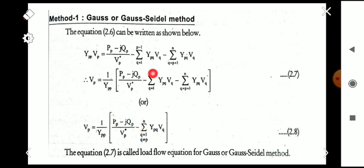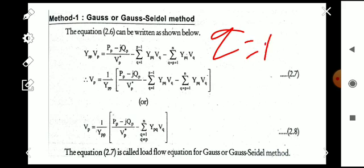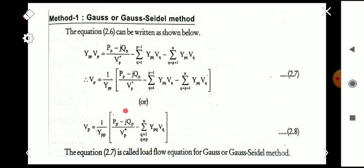Moving Ypp to the right-hand side, we get: Vp = (1/Ypp) · [ (Pp − jQp)/Vp* − sigma (q=1 to n, q≠p) Ypq·Vq ]. Here q=p is excluded since that term is on the left side. This equation is called the load flow equation for the Gauss-Seidel method.